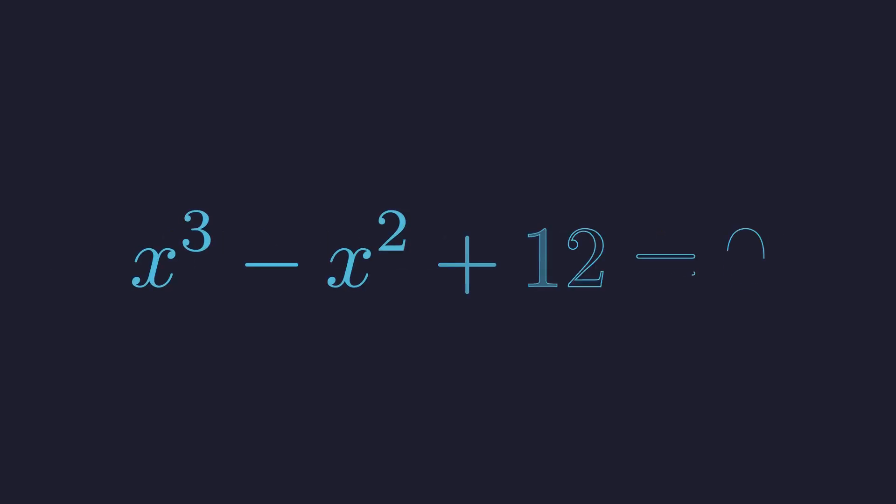Back to our standard form. Notice that 12 can be written as 8 plus 4. This isn't random. 8 is 2 cubed and 4 is 2 squared, mirroring the powers we already have.